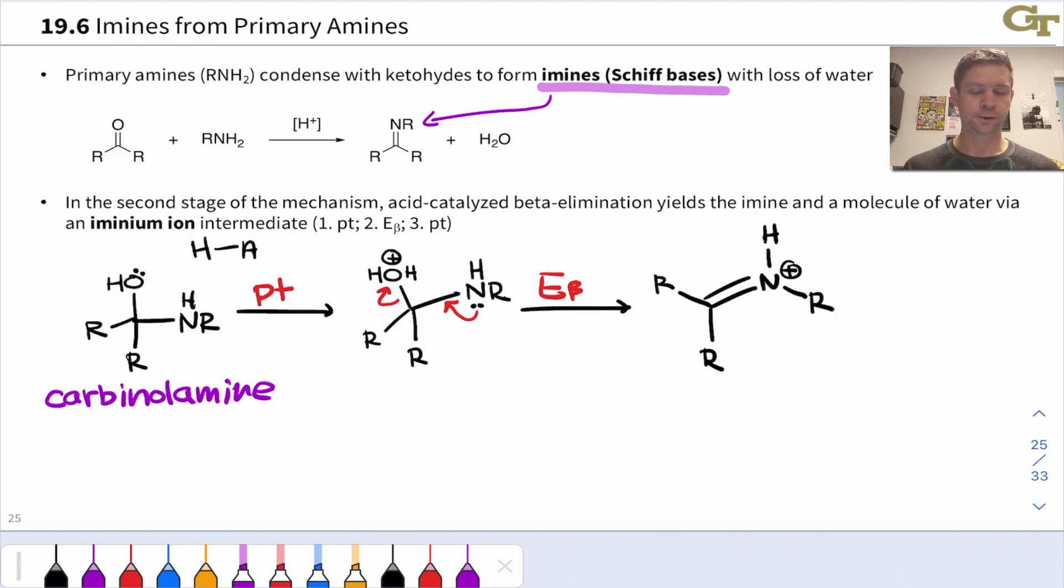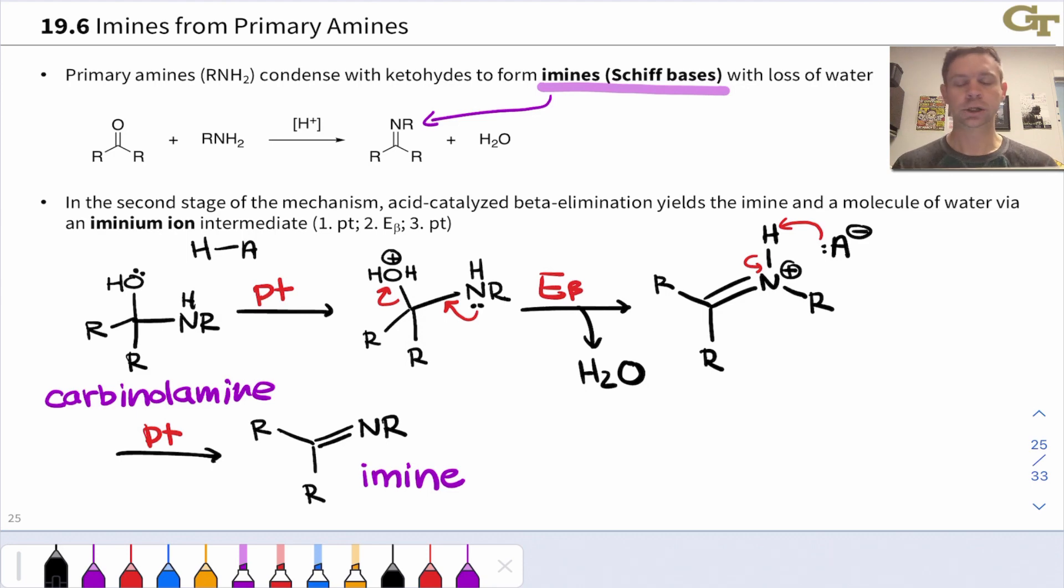It's the protonated version of our final product. To get to the final product, we need to regenerate the catalyst. Notice we used up HA in this proton transfer step, so we've got A- around. We need to get a neutral organic product, and the neutral organic product has that C=N double bond without a positive charge on the nitrogen. This product with a C=N double bond with this NR group replacing a carbonyl oxygen is known as an imine. A molecule of water is lost at the beta elimination step, and to drive this reaction forward we often remove water through various experimental means to pull the reaction toward the imine side.